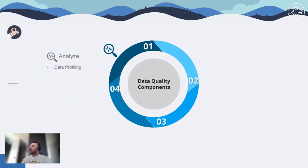A good data quality solution — whether a framework or a library — should consist of these sorted components. First, as a data quality engineer or data engineer, we have to analyze the dataset and gather statistics of each column, such as data types, maximum and minimum values, distinct values, and null value counts. Data profiling is the feature that provides this capability.